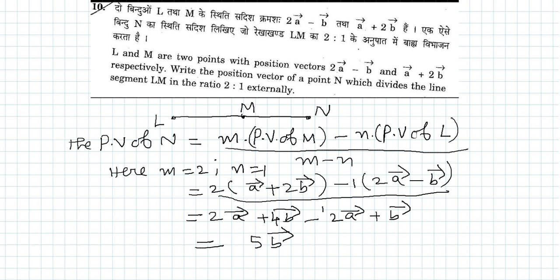of L divided by m minus n. Here m is 2, n is 1, and the position vectors of M and L are given. Let us substitute all the values.